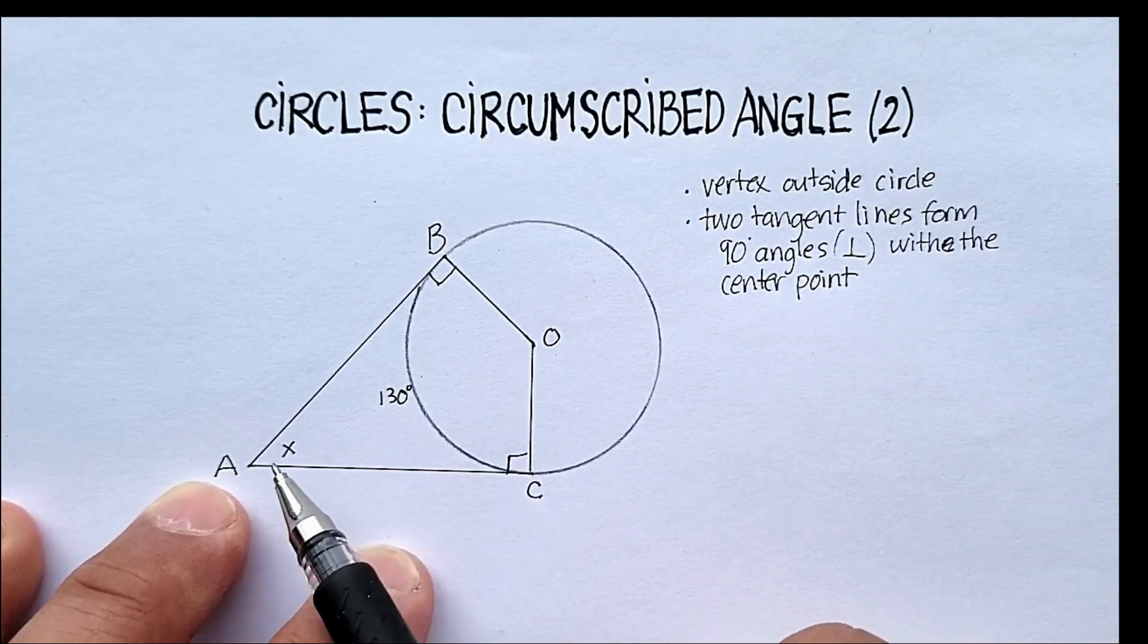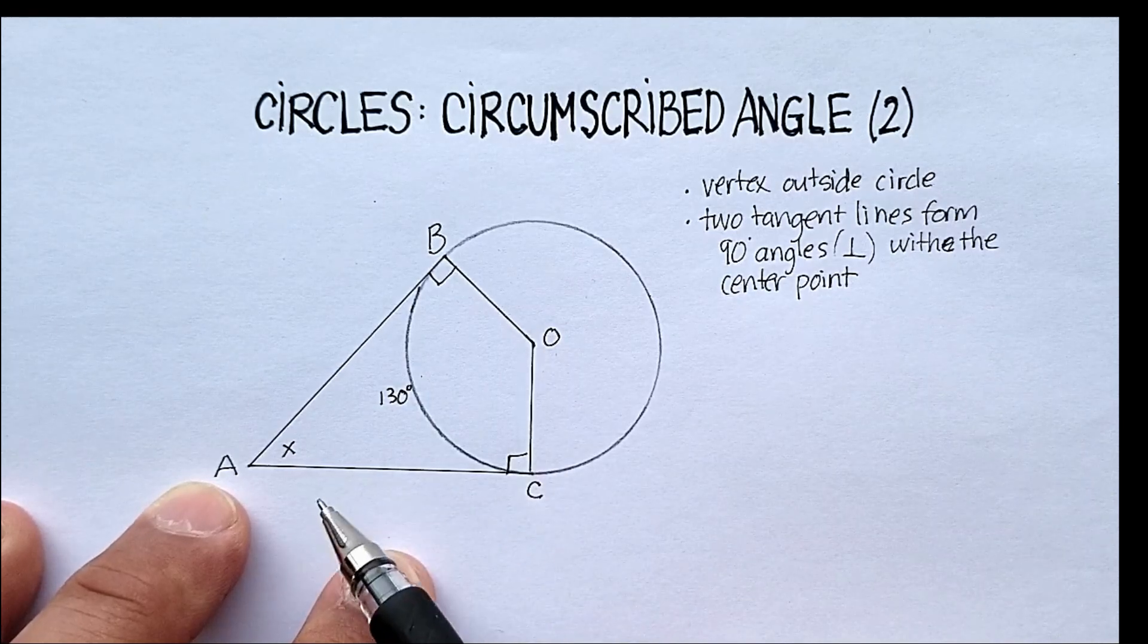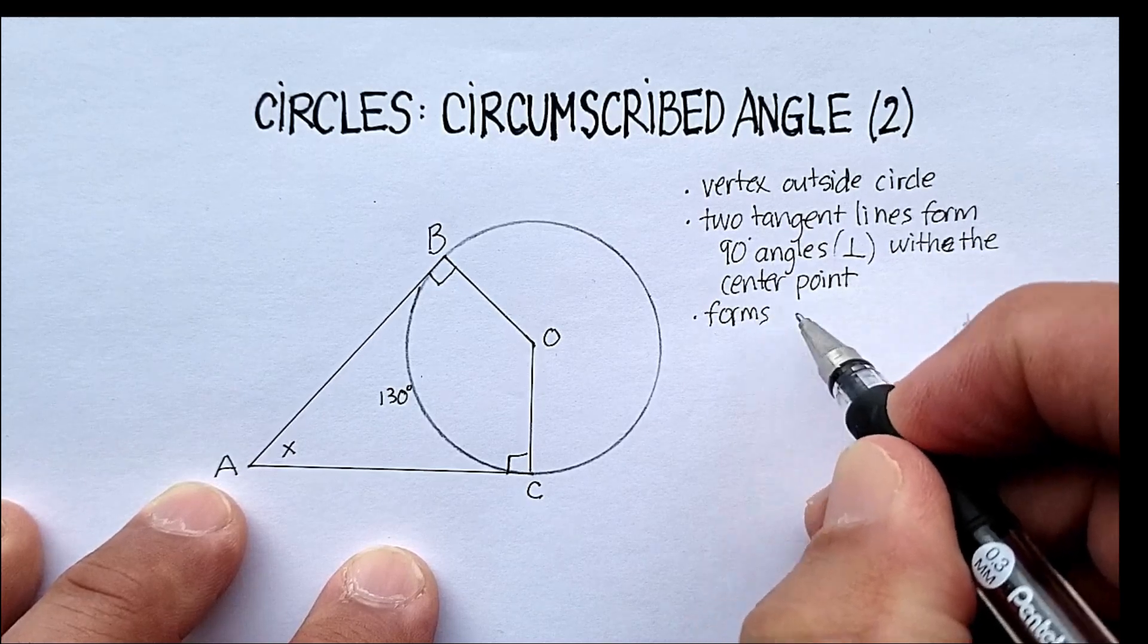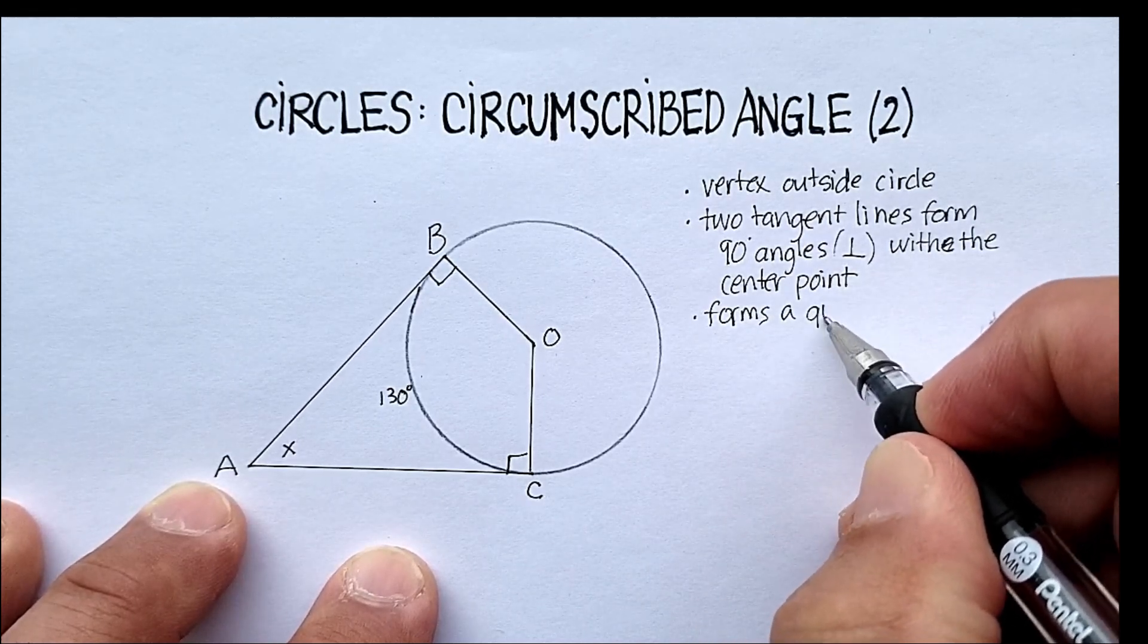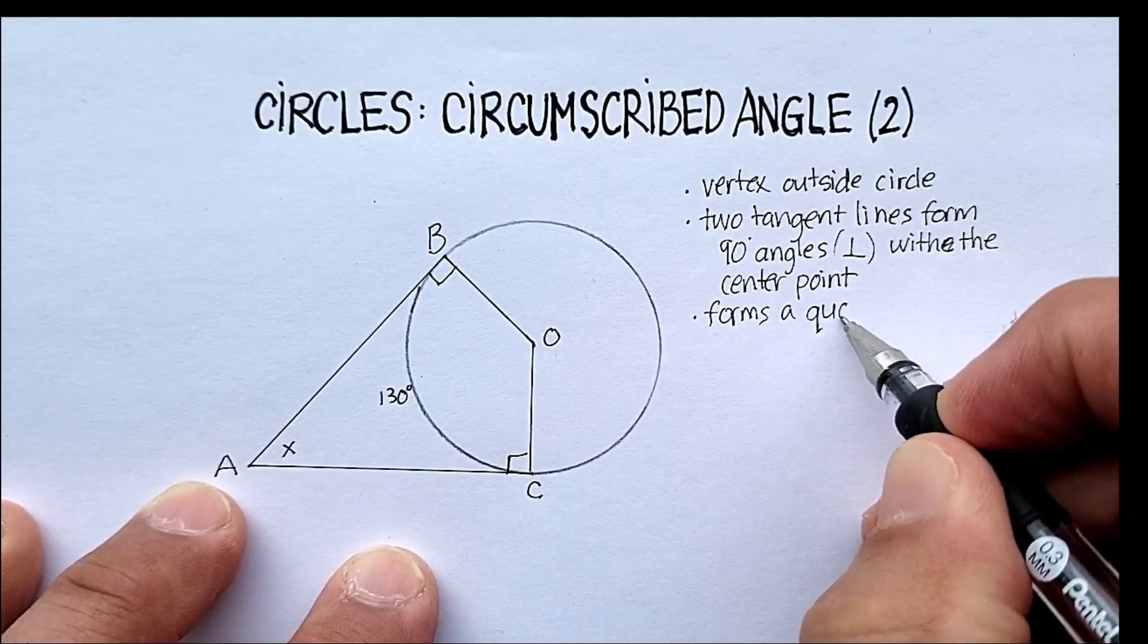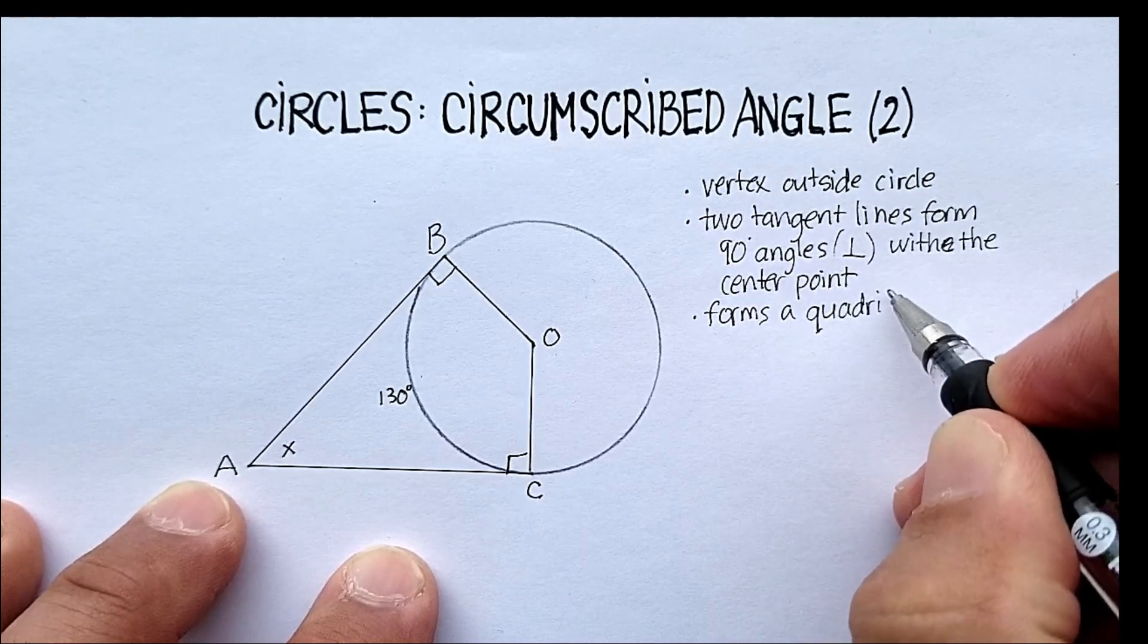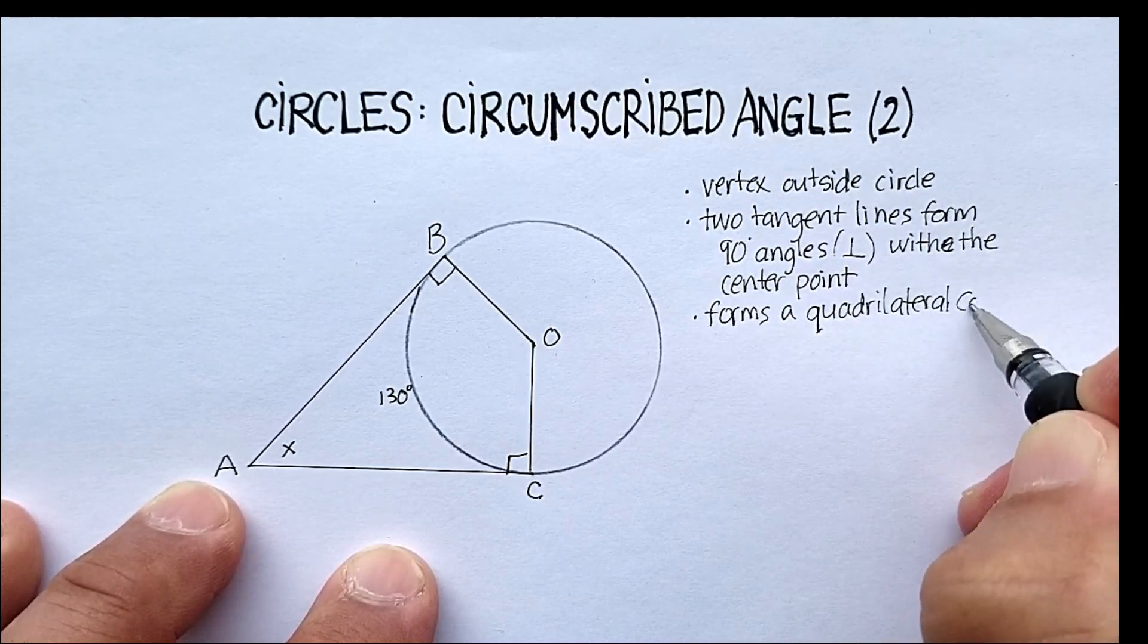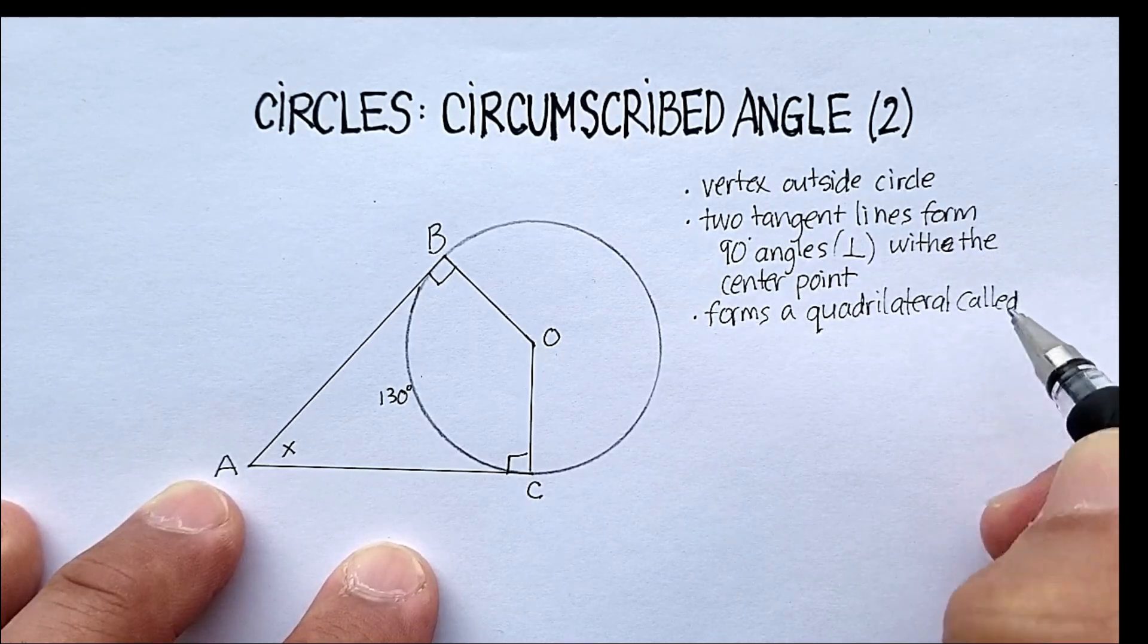In this particular case, we will form a kite, right? A four-sided figure. So it forms a quadrilateral called a kite.